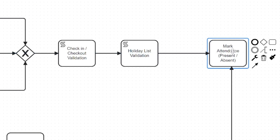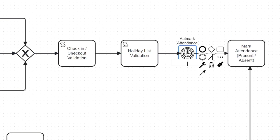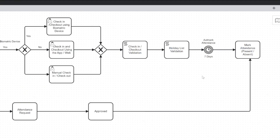If a person is automatically marked absent or present, the system will not allow overriding this. That is why there is a delay from the validation process until the system marks automatic attendance. There is a seven-day grace period, giving employees time to get their attendance marked and approved. Otherwise, check-in and check-out will mark the attendance automatically — ERPNext will mark it, and once marked, you cannot override it.